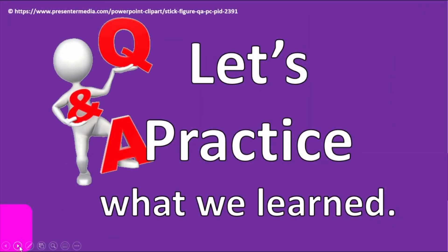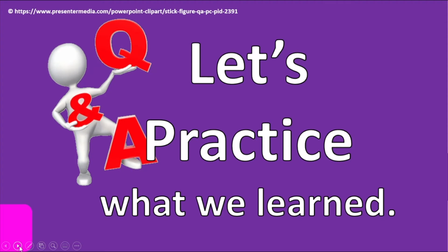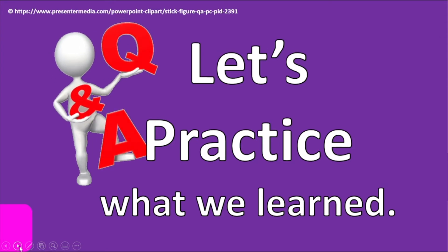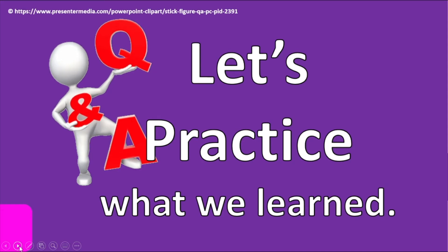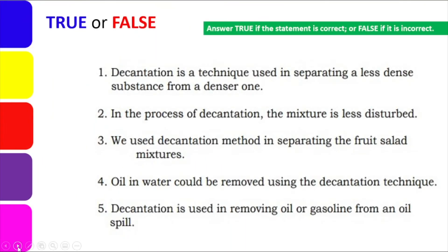Now that we have learned about decantation — a technique of pouring out one part of a mixture, either a solid-liquid mixture or a mixture of immiscible liquids — let's practice what we learned. In this activity, we will answer these items with true or false. Number 1: Decantation is a technique used in separating a less dense substance from a denser one. Number 2: In the process of decantation, the mixture is less disturbed. Number 3: We use the decantation method in separating fruit salad mixtures. Number 4: Oil in water could be removed using the decantation technique. Number 5: Decantation is used in removing oil or gasoline from an oil spill.